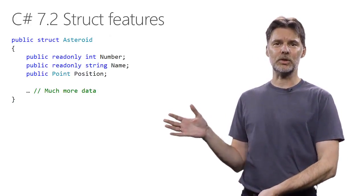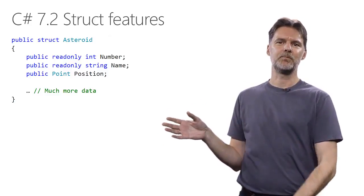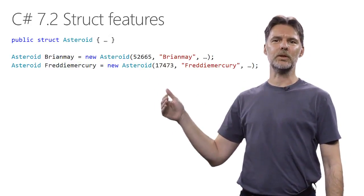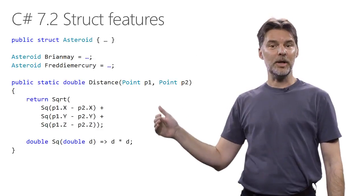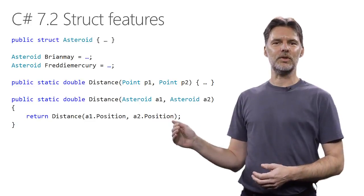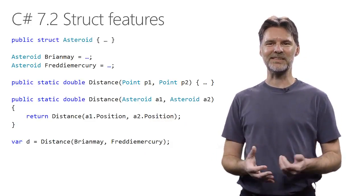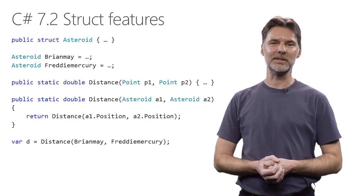To start with, here's a large struct type for representing asteroids. Imagine there's a lot more in there. Now, let's create a few well-known asteroids, a helper method to compute the distance between two three-dimensional points, and a method to compute the distance between two asteroids based on that helper method. Now we can find the distance between Brian May and Freddie Mercury. How cool is that?